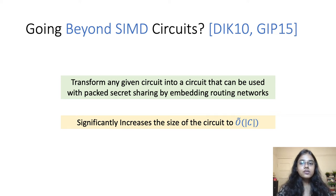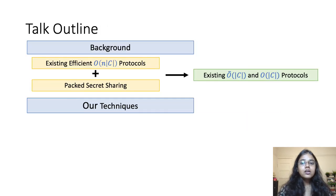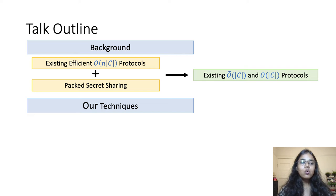While the previous ideas only work for SIMD circuits, Damgård et al. and Kenkin et al. show that any given circuit can be transformed into a circuit compatible with packed secret sharing by embedding routing networks. However, this circuit transformation significantly increases the size of the circuit to O-tilde C. As a result, the complexity of the resulting protocol is also O-tilde C. To summarize, all existing order C and O-tilde C protocols use a combination of packed secret sharing and the batched randomness generation idea. However, these ideas limit the scope of order C protocols to just SIMD circuits, or incur O-tilde C communication instead of just order C, which is clearly not ideal.